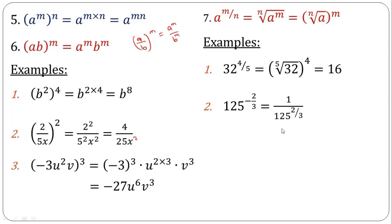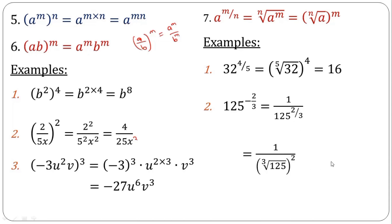Having more than one rule in a particular problem is possible, so understanding all the rules helps you know how to apply them. First, apply the negative index rule to get 1 all over (1/125) raised to the positive power of 2 over 3. Then under this denominator, apply the fractional index rule: the denominator becomes a cube root and the numerator becomes a square. The cube root of 125 is 5, and 5 raised to the power of 2 is 25. So the answer is 1 all over 25.